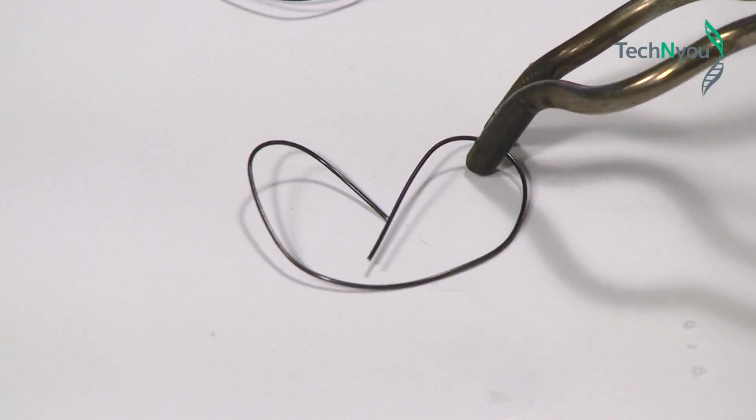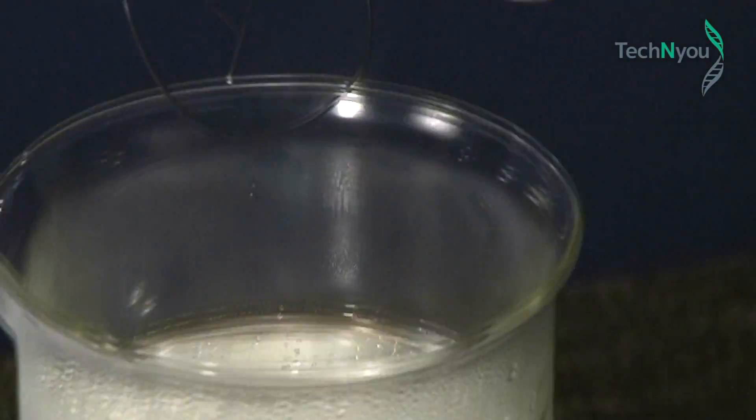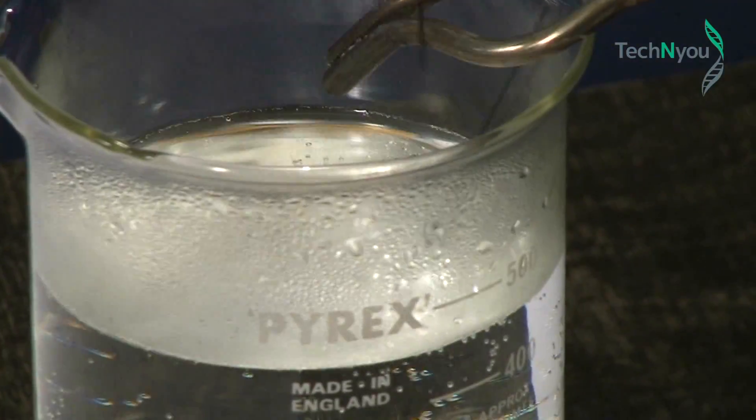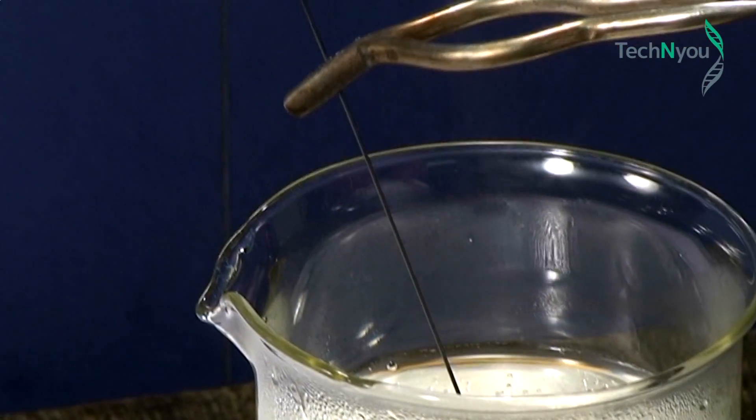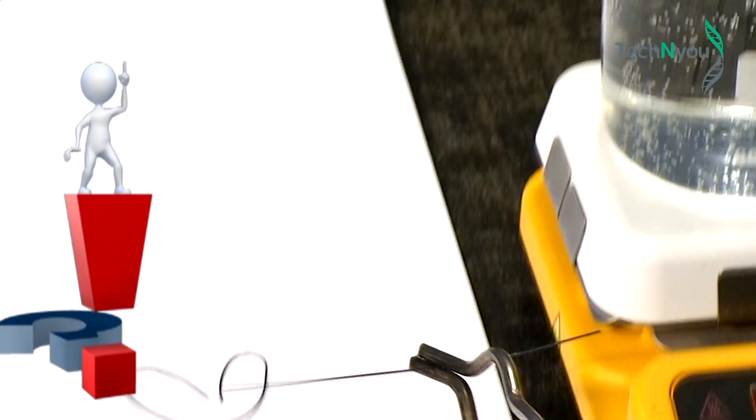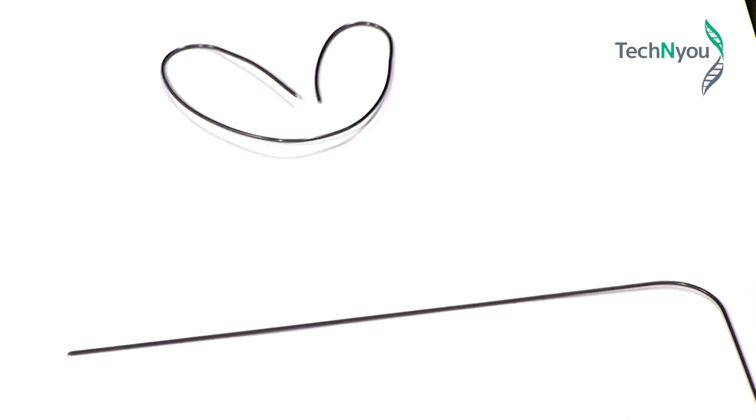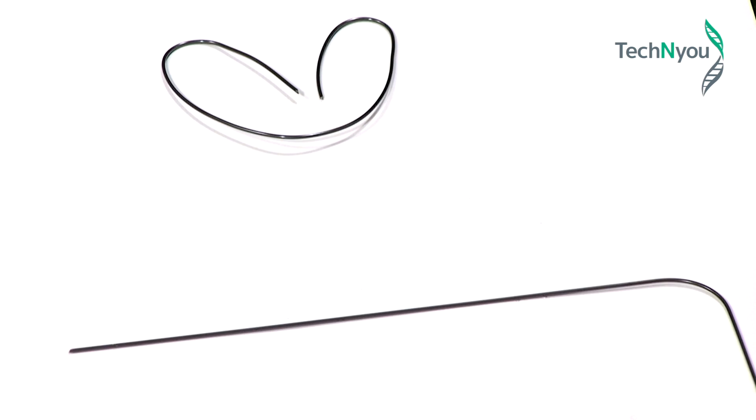Now let's try the Nitinol wire. We have to be very careful when it goes into the hot water, because it will change shape quickly. As you can see, the Nitinol wire has recovered its original straight shape. We've just observed how differently Nitinol behaves from the other metals in identical conditions at controlled temperatures.